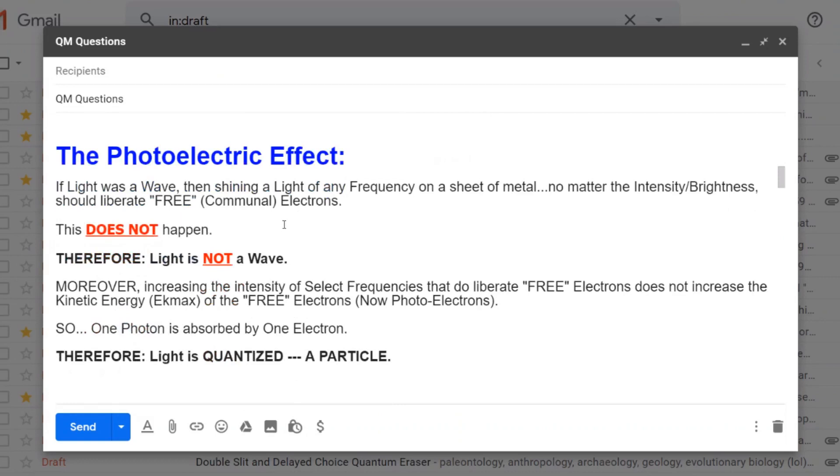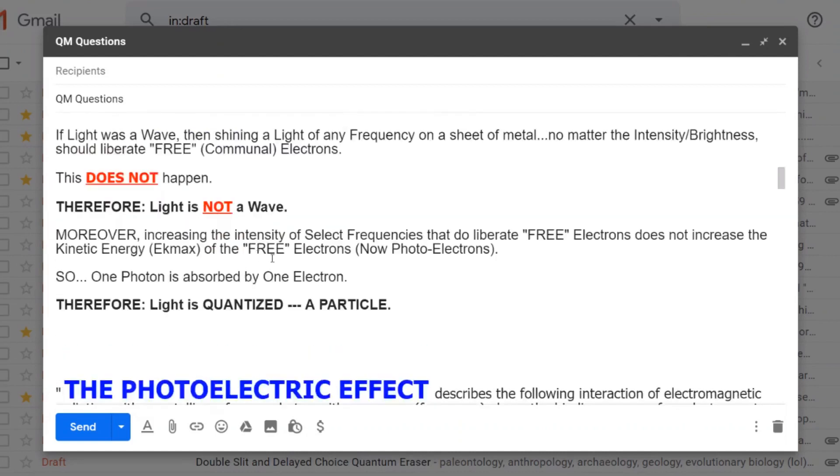If light was a wave, then shining a light of any frequency on a sheet of metal, no matter the intensity or brightness, should liberate free communal electrons. This does not happen. Therefore, light is not a wave. Moreover, increasing the intensity of the select frequencies that do liberate the free electrons does not increase the kinetic energy, that's the K max, of the free electrons, now called photo electrons. So one photon is absorbed by one electron. Therefore, light is quantized. Therefore, light is a particle.